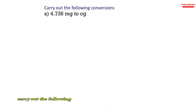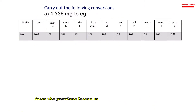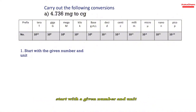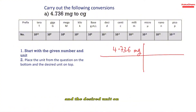Carry out the following conversion: A — 4.736 milligrams to centigrams. Step 1: Start with the given number and unit, which is 4.736 mg. Step 2: Place the unit from the question on the bottom and the desired unit on top.